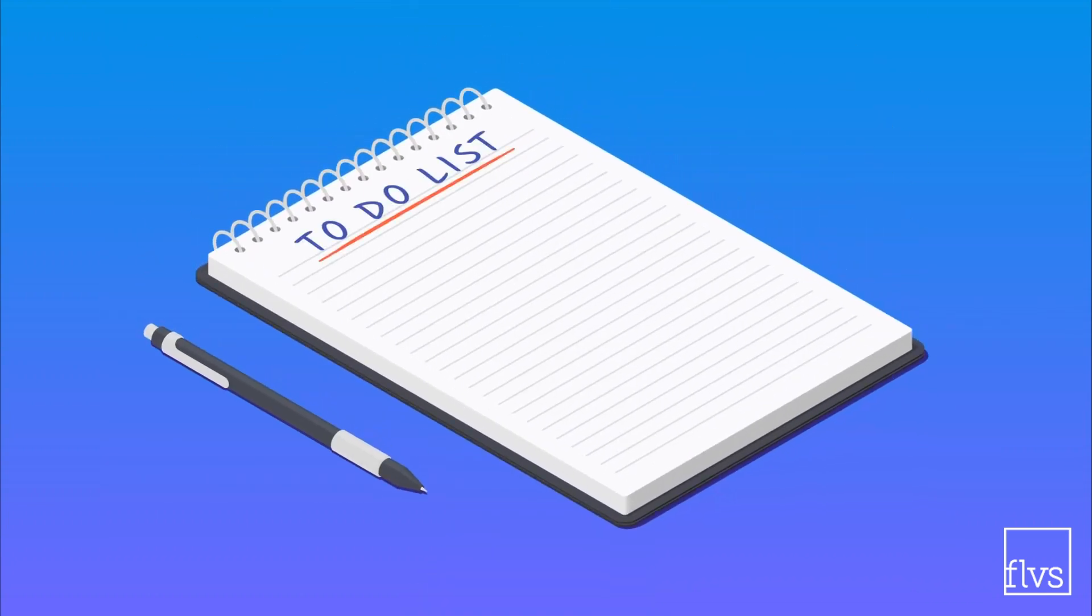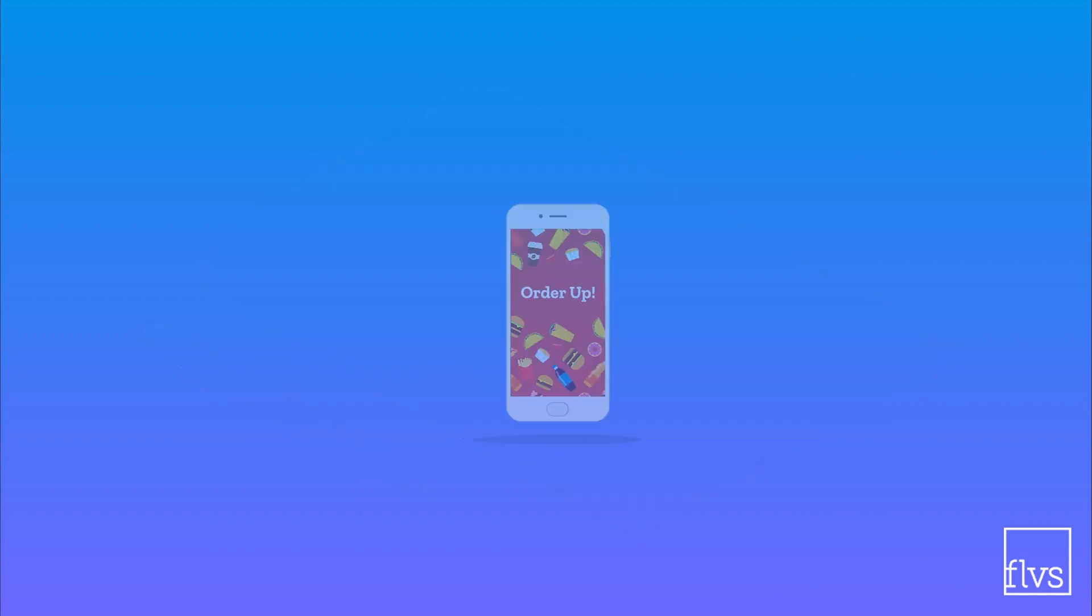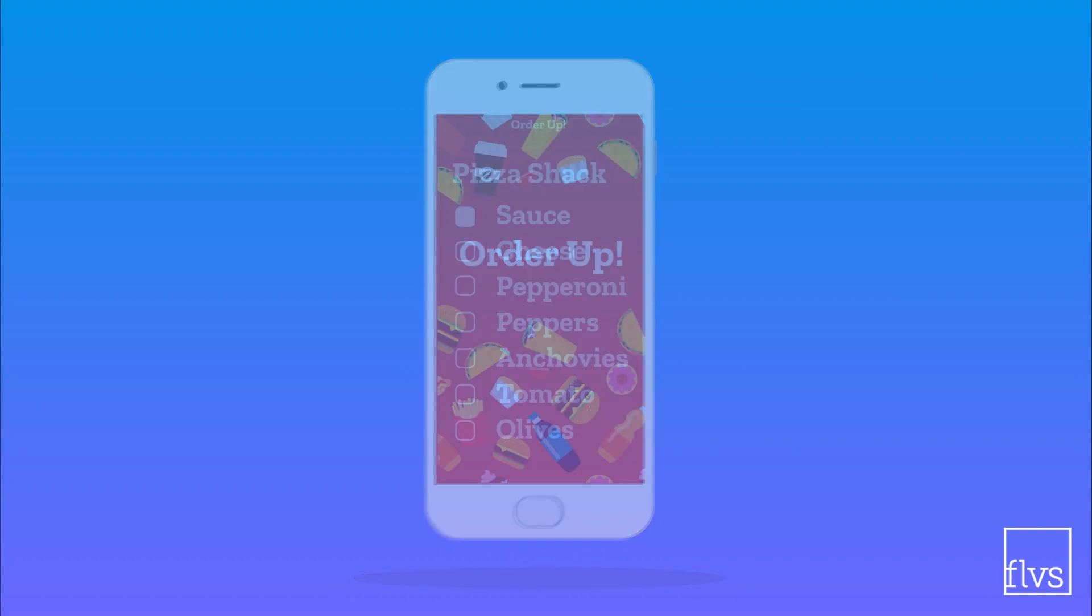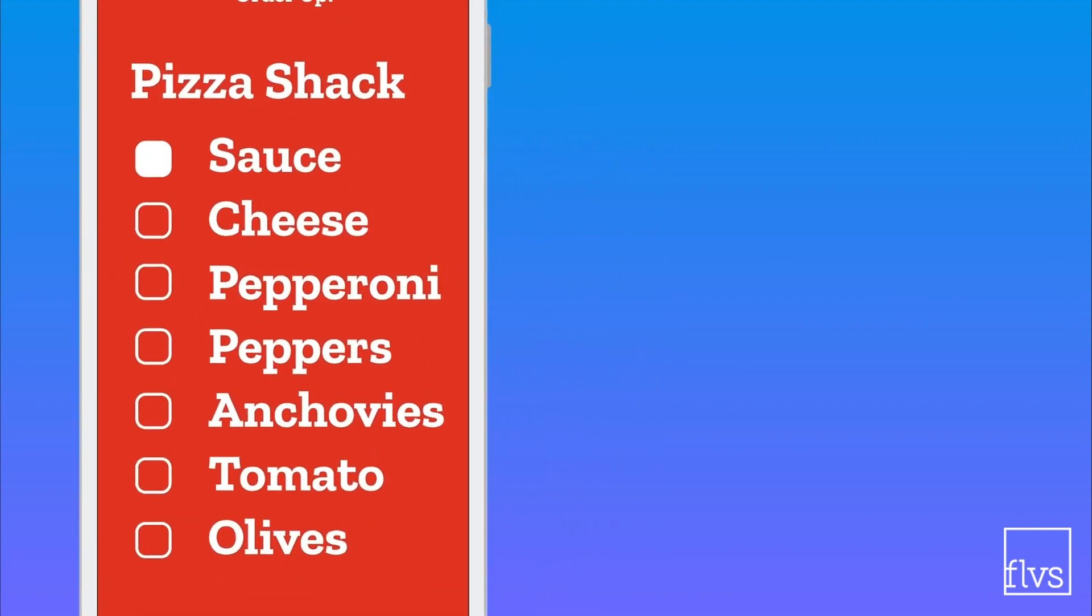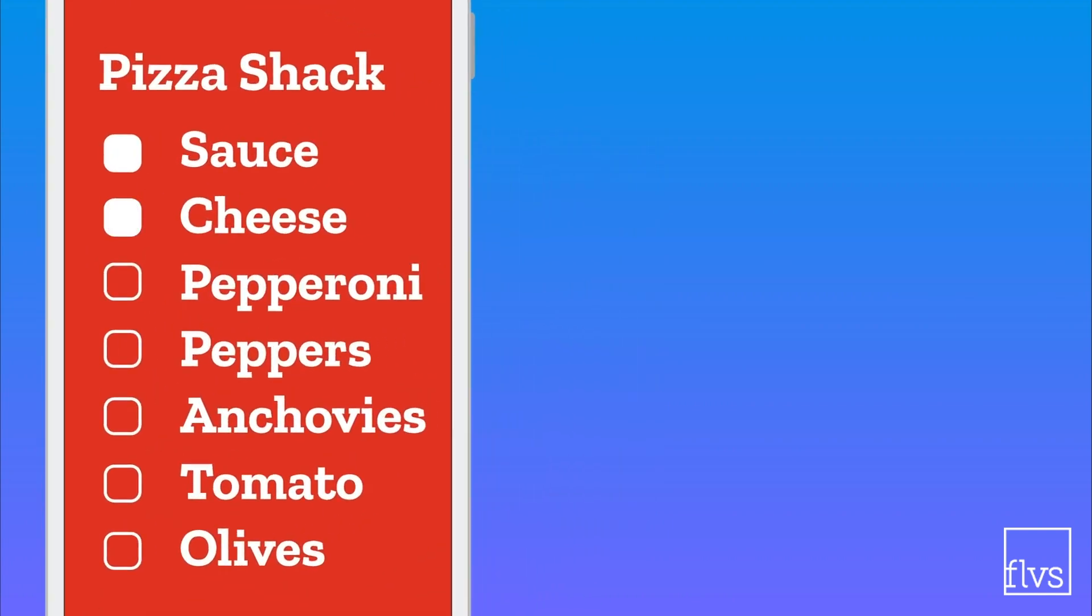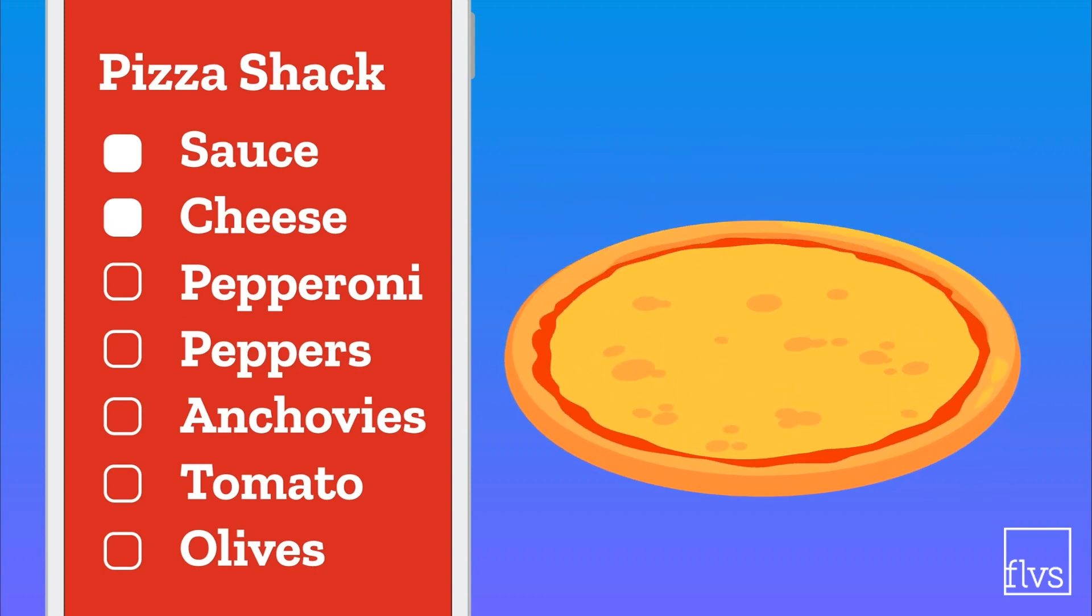Think about it this way: say you're coding an app that takes food orders. You want to write code so that if one thing happens, like pressing a cheese button, a logical thing will happen, like adding cheese. The same goes for pepperoni, peppers, maybe not anchovies.